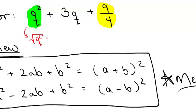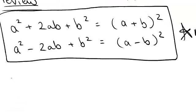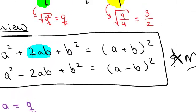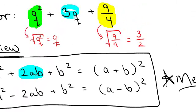Of q squared, and that would give me q. And same thing with the 9/4—I could take the square root of 9/4 and then that would give me 3/2. So that means my a is going to be q, my b is going to be 3/2.